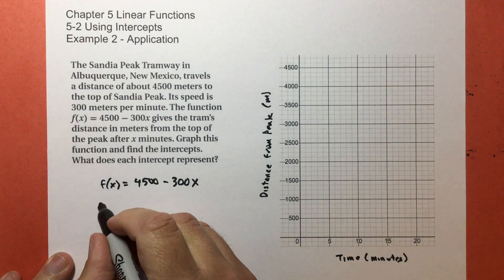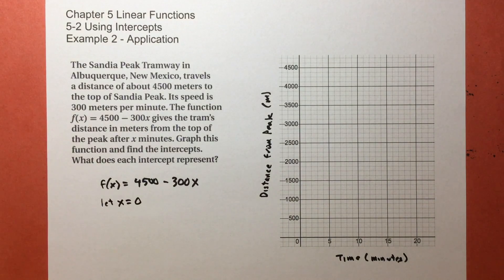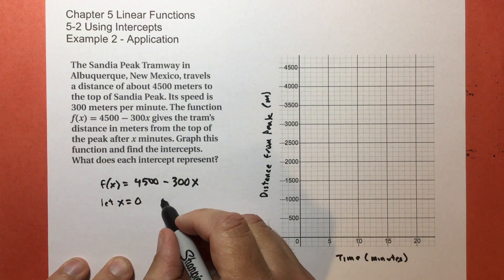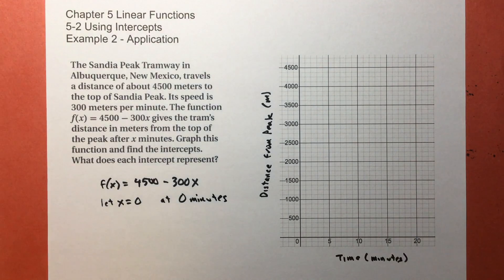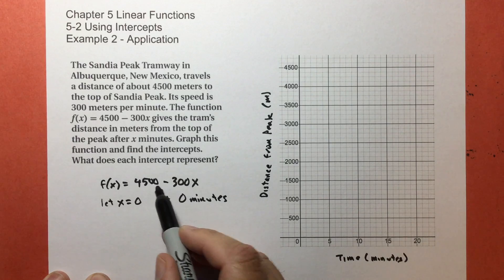All right, so the first thing I'm going to do is I'm going to let x equal zero. And we're going to do this all together at the same time. When I say let x equal zero, this means at zero minutes into the ride. So basically, it's at that precise moment when everyone's loaded up onto the tramway, and then it's just about to start. Before it starts to move, just momentarily, just instantaneously before it starts to move,